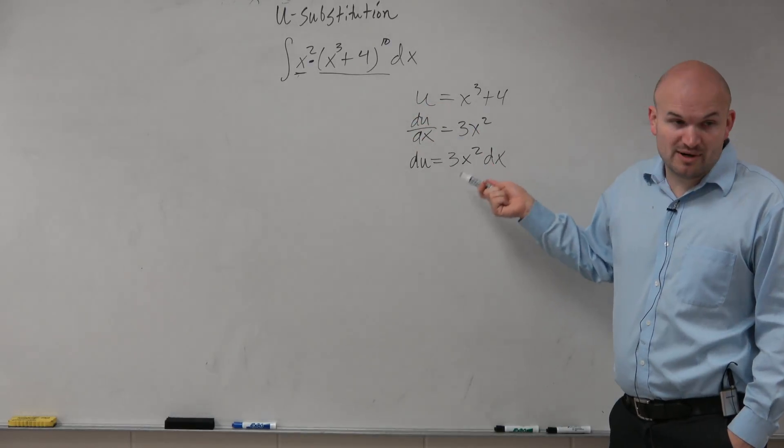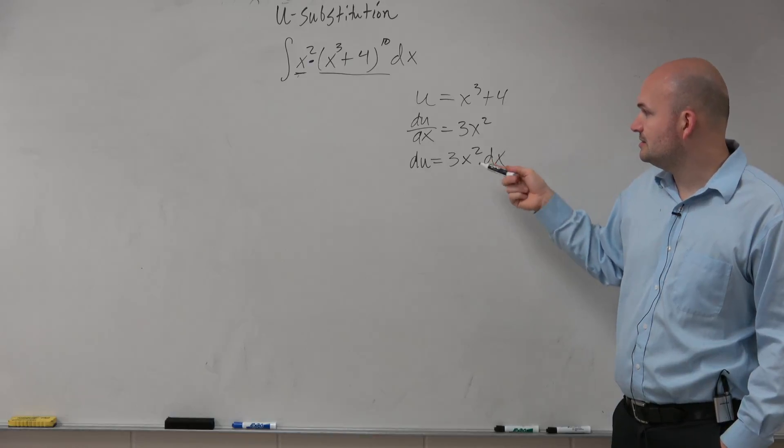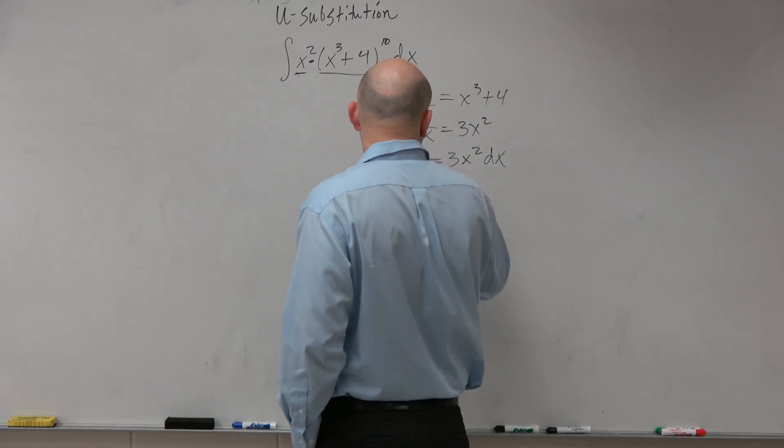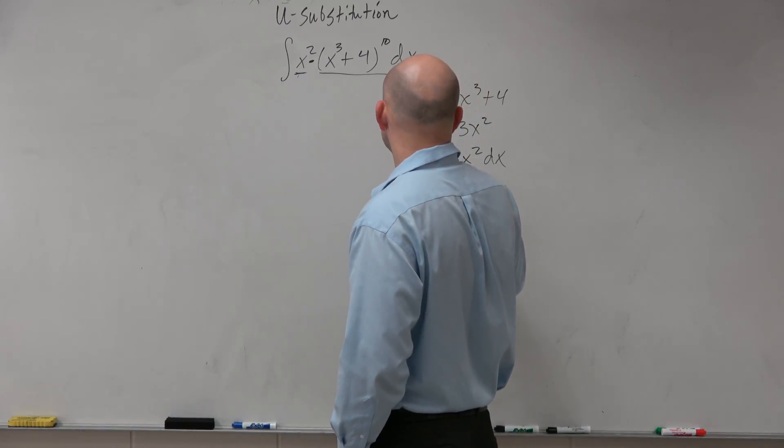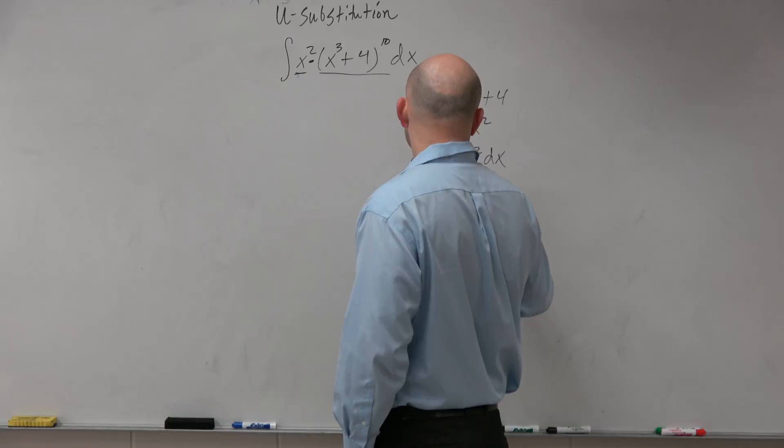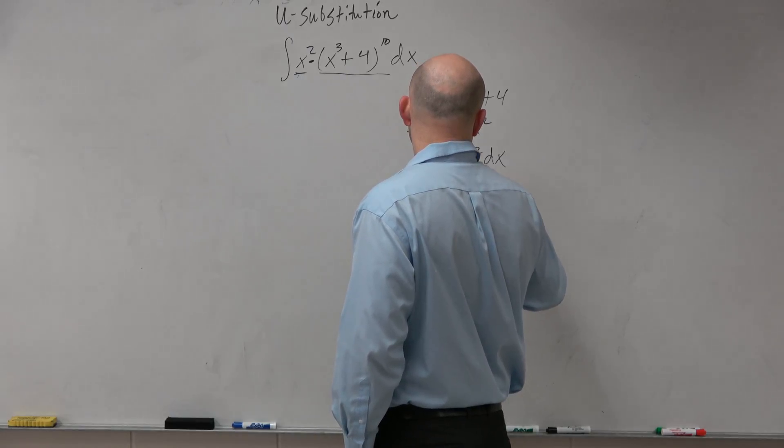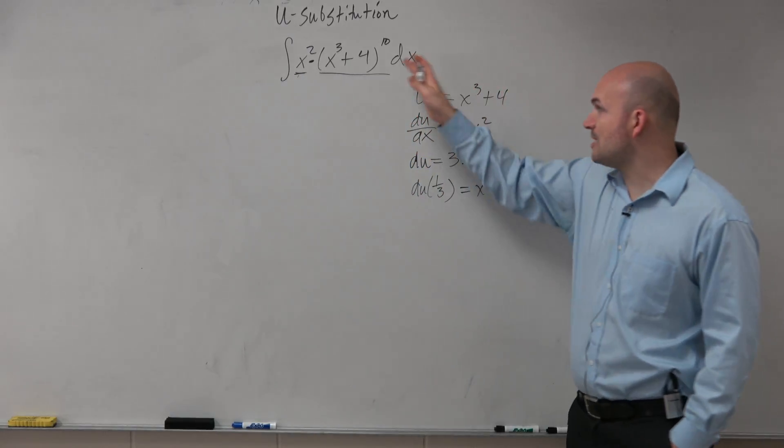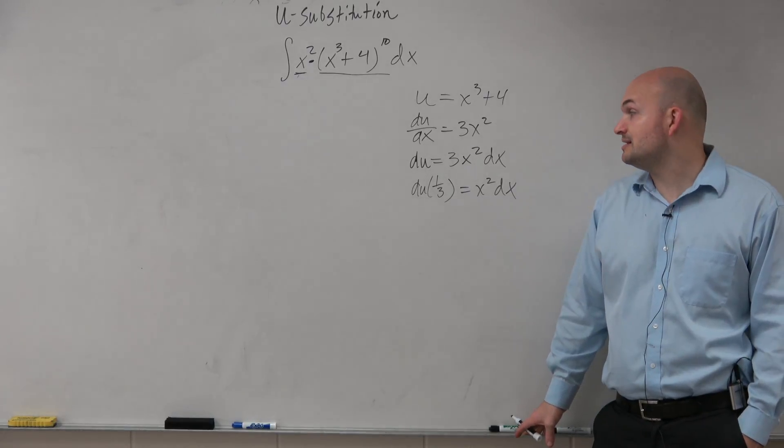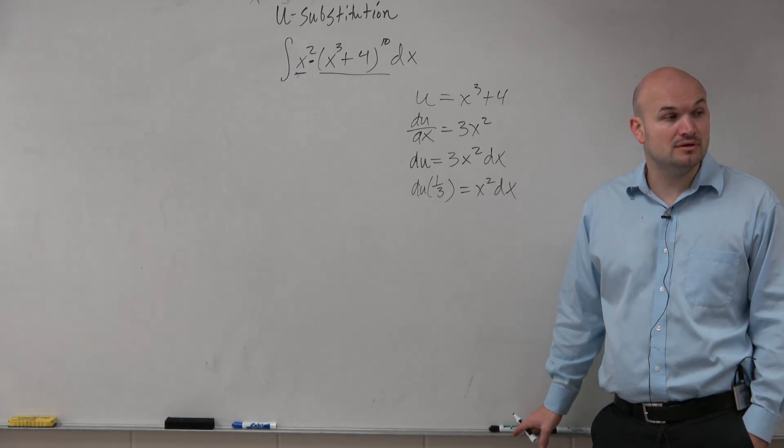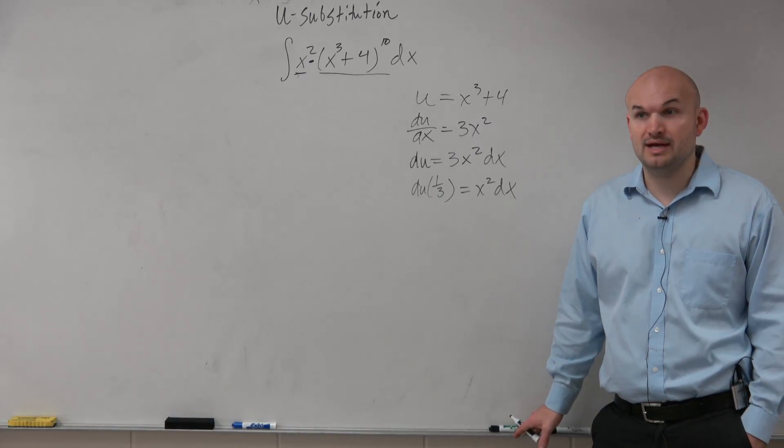But basically, the way that you guys could think about this, if you want to solve for dx, you could basically say, or not solve for dx, but if you replace this, you could say du times 1 third is equal to x squared dx. Now, in this problem, do I have an x squared and a dx? And the x squared and the dx is equal to 1 third du, right?